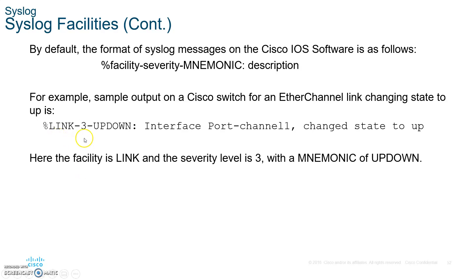Here's an example of an entry in the syslog. It shows severity number three, and it's up-down. It shows the service timestamp, the facility link, and the severity level is three with the mnemonic of up-down. It's saying the interface went up or went down. Severity number three is an error condition — for example, if an interface went down, that would be an error.